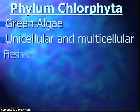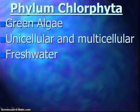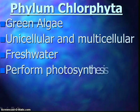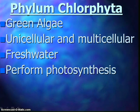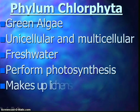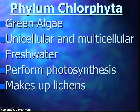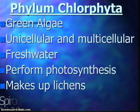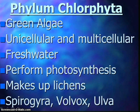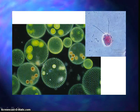The green algae can be unicellular or multicellular and live in freshwater. There are about 7,000 species identified so far. They can also live in moist land or saltwater and inhabit other organisms. Green algae perform photosynthesis with photosynthetic pigments, and they do make up lichens. Some examples are spirogyra, which is filamentous; volvox, which is a globe-shaped colony; and ulva, which looks like a lettuce leaf — kind of like pond scum.